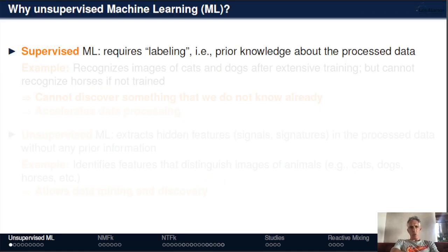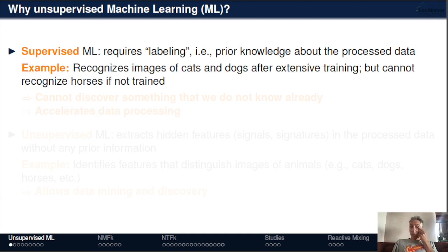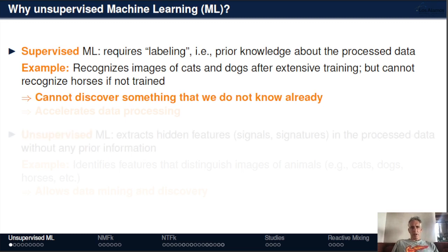I'll start by discussing why unsupervised machine learning. Supervised machine learning methods are very popular; however, they require labeling or prior knowledge about the process data. For example, a model can be applied to recognize images of cats and dogs after training, but cannot recognize images of horses if not trained before, and cannot discover something new that we don't already know.